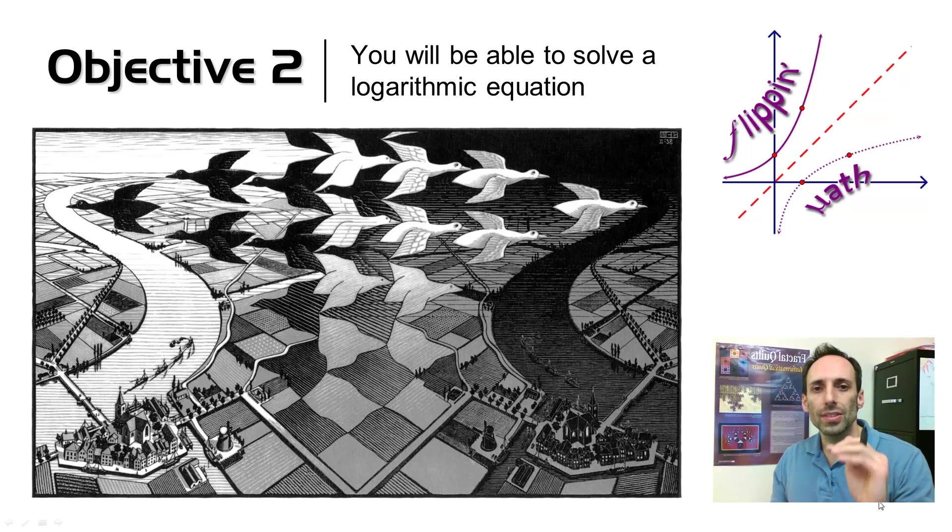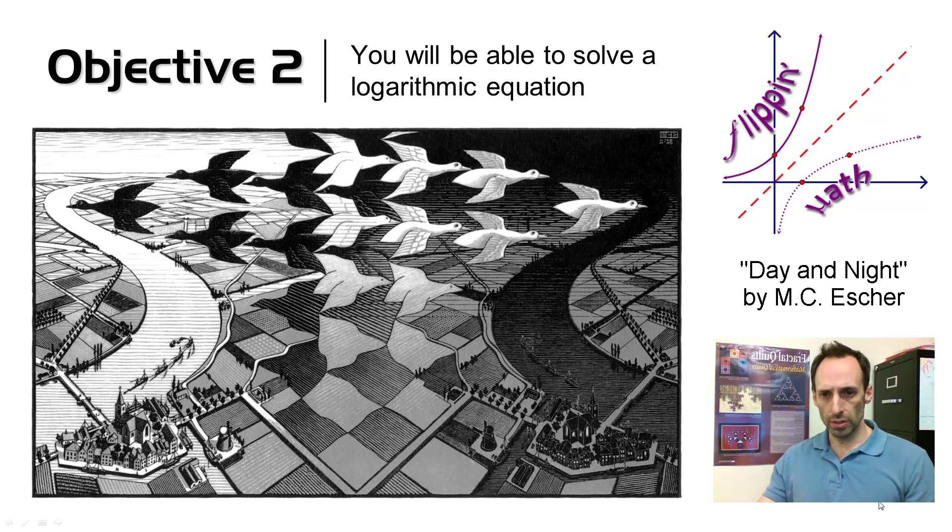And we're going to have the exact same methods on solving logarithmic equations. So I chose this M.C. Escher picture because, as you can see, the white birds are slowly turning into the black birds.